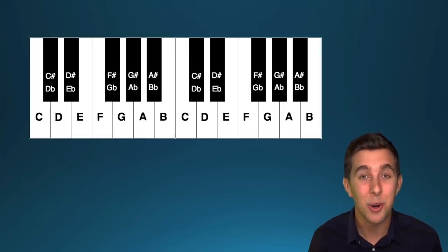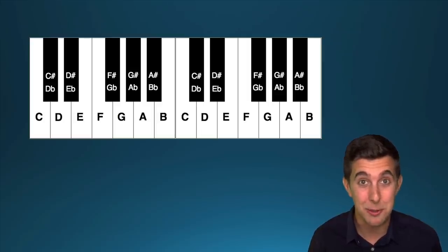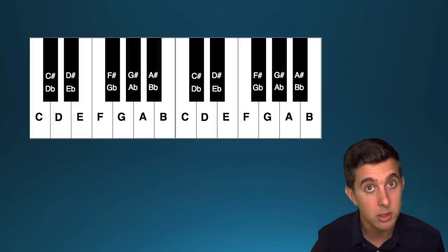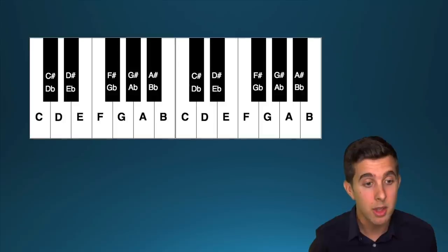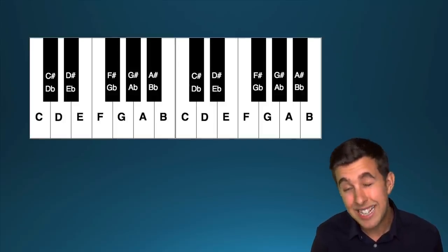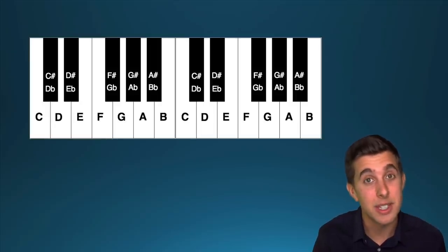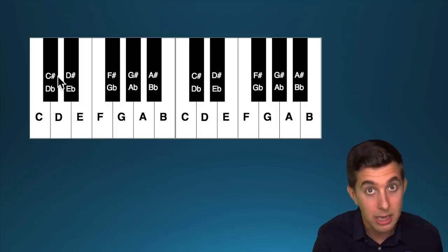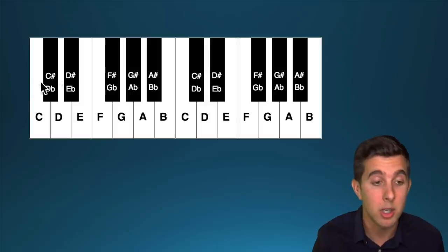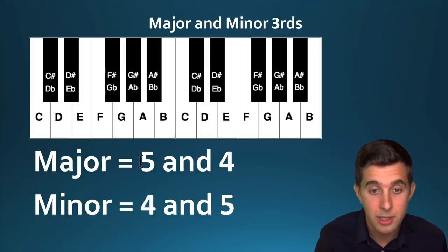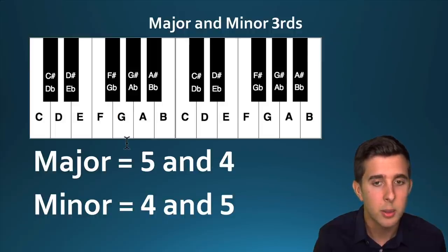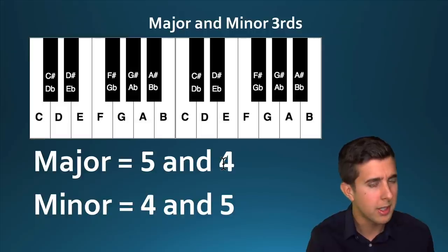Now we're going to be looking at chords. Basically a chord just means a few notes played together. The most common ones are major chords and minor chords, and there's a really subtle difference between the two of them that makes a big difference in sound. The easiest way to put it — which is really oversimplified — is major is happy and minor is sad. I've got a pattern to work out the difference: major is five and four, and minor is four and five.